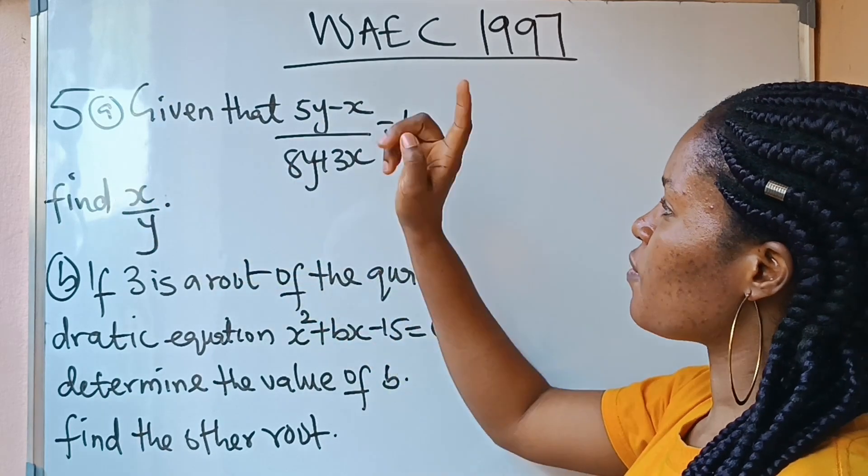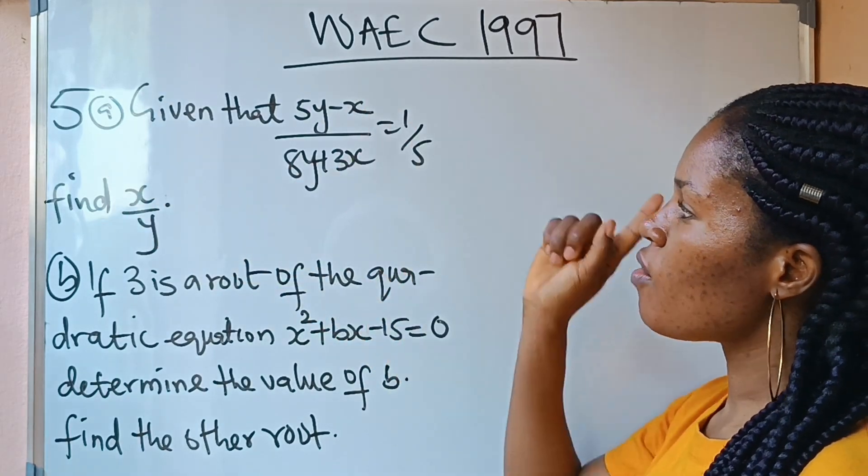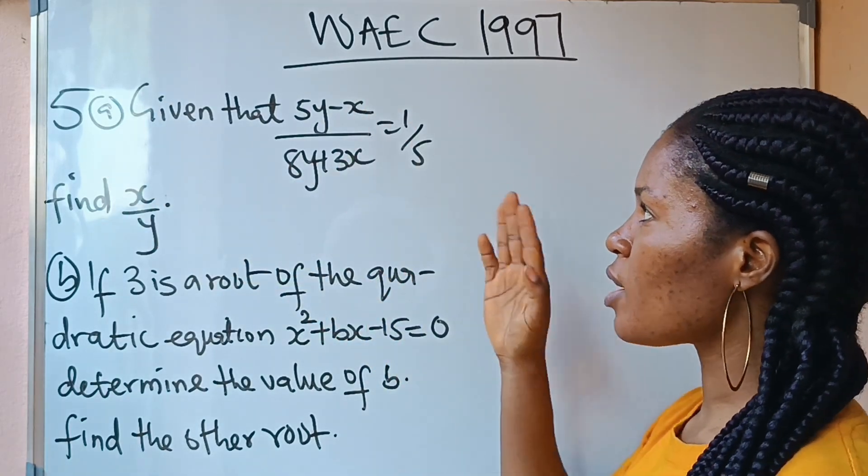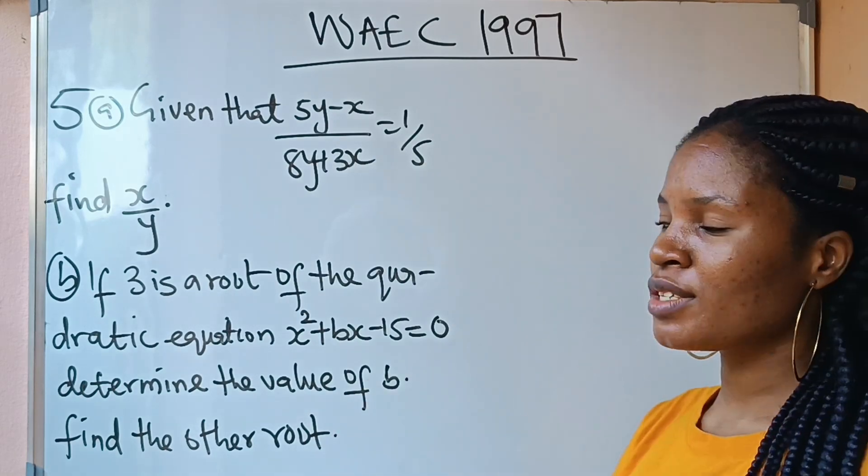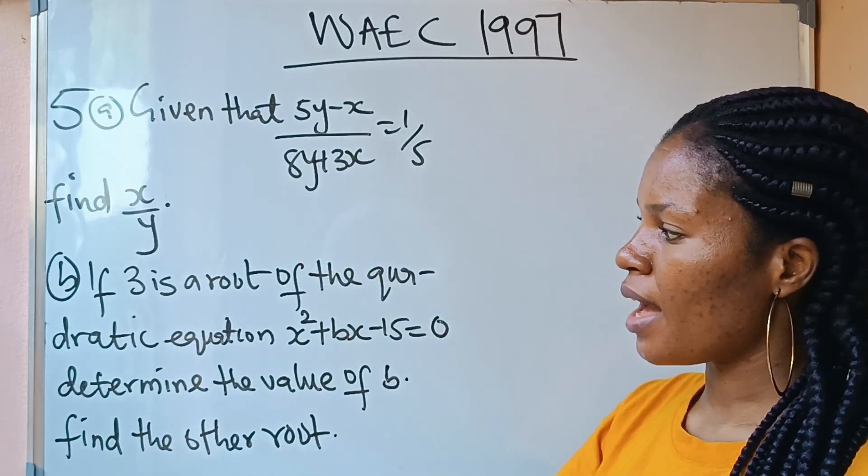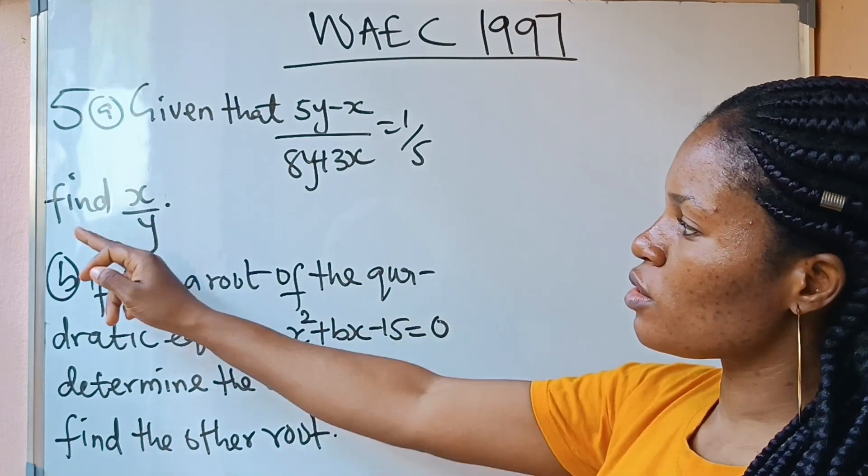So we are asked, given that (5y - x) / (8y + 3x) = 1/5, we are asked to find x/y. Then this is the b part.